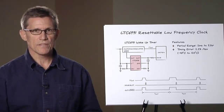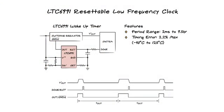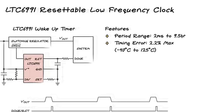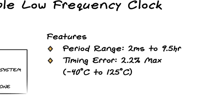The next part in the family is the LTC6991 resettable low frequency oscillator. The key feature of this part is its very low operating frequency with a period as long as nine and a half hours.